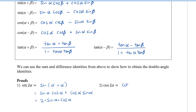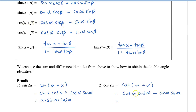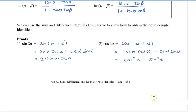We can do the same thing for cos 2α. Writing it as cos(α + α) and using the cosine sum identity, we get cos α · cos α minus sine α · sine α, which simplifies to cos²α minus sin²α. Now, cos 2α is special because there are actually two other equivalent forms we can convert it to.